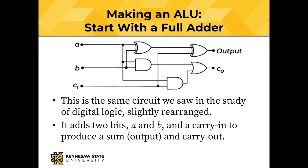We're going to start with a full adder — the same circuit we saw in the study of digital logic, slightly rearranged but still exactly the same circuit in terms of gates, wiring, and logic flow. The positions of the gates have been moved slightly to make adding to the circuit easier. It has two input bits A and B, a carry-in labeled C sub i, and produces an output labeled output and a carry-out labeled C sub o.